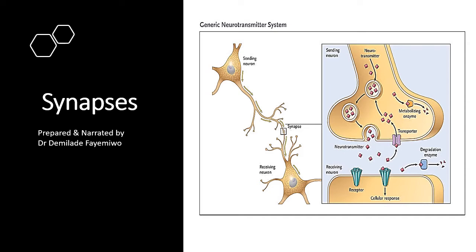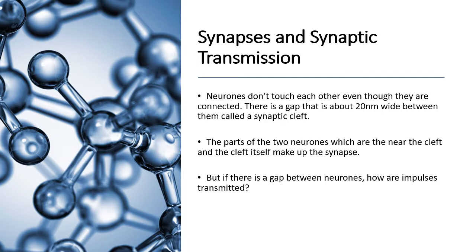Let us get into synapses. We've spoken about how nerve impulses are transmitted and how the reflex arc works — the sensory neuron connects to the relay neuron, which connects to the motor neuron, which sends information from the stimulus to an effector that then responds. What's interesting is that neurons don't actually touch each other, even though we say they are connected. They have a gap of about 20 nanometers between them, and that gap is called a synaptic cleft.